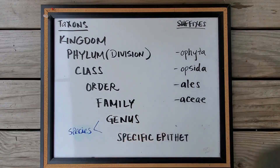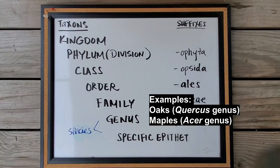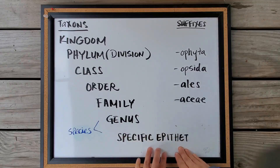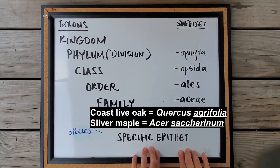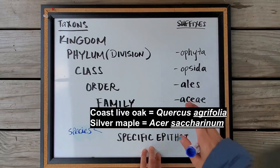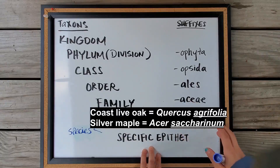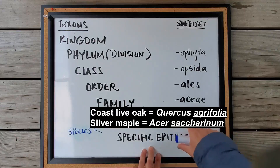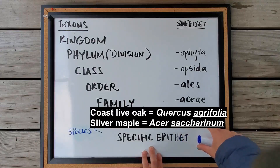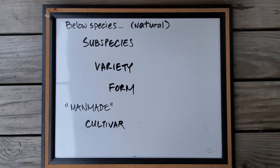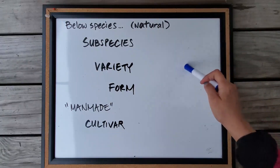The genus is where we start getting more familiar — oaks belong to the genus Quercus and maples to Acer. Then you get more specific down to the species level with the specific epithet, giving you names like Coast Live Oak or Silver Maple. This is what we use for the scientific name. Within the species there can be further subcategories such as subspecies, variety, and form.